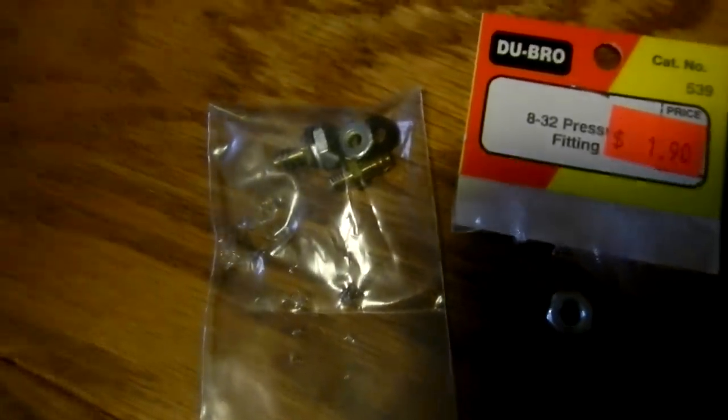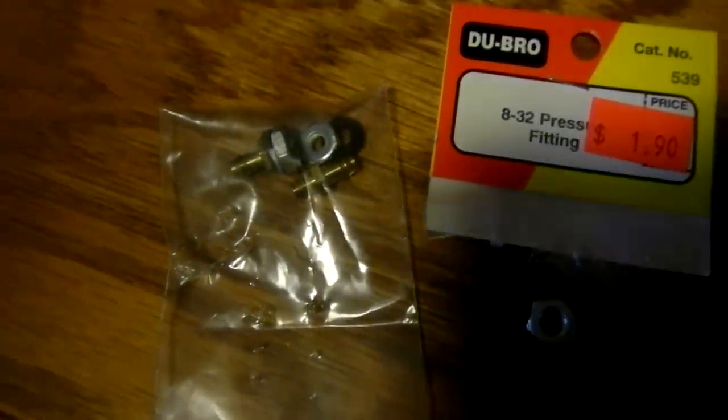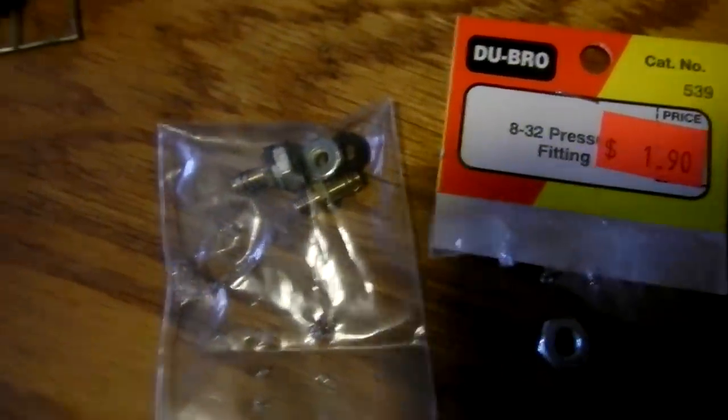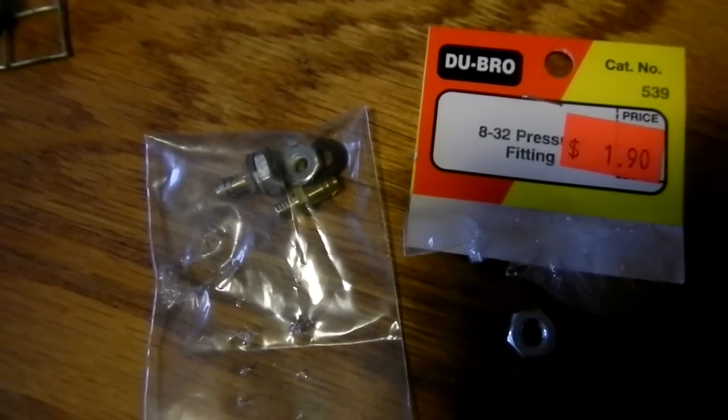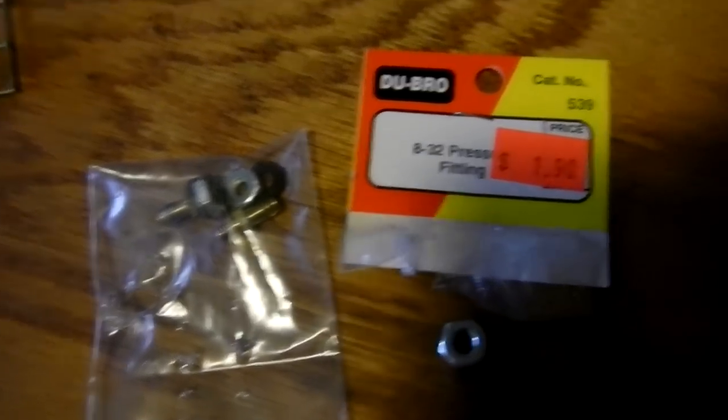And of course these nipples for the fuel line are from RC cars and can be purchased at a hobby store, and as well as the silicone hose that I'm going to show you on this stove.